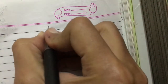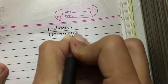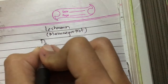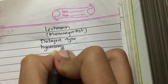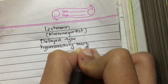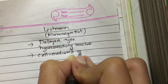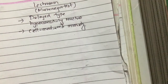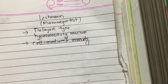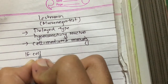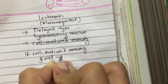Here we will discuss the Leishmanin or Montenegro test. The Montenegro test is a type of delayed-type hypersensitivity response, which is mediated by cell-mediated immunity. The Leishmanin or Montenegro test detects the level of cell-mediated immunity in the body. If cell-mediated immunity is good, then the test is positive.